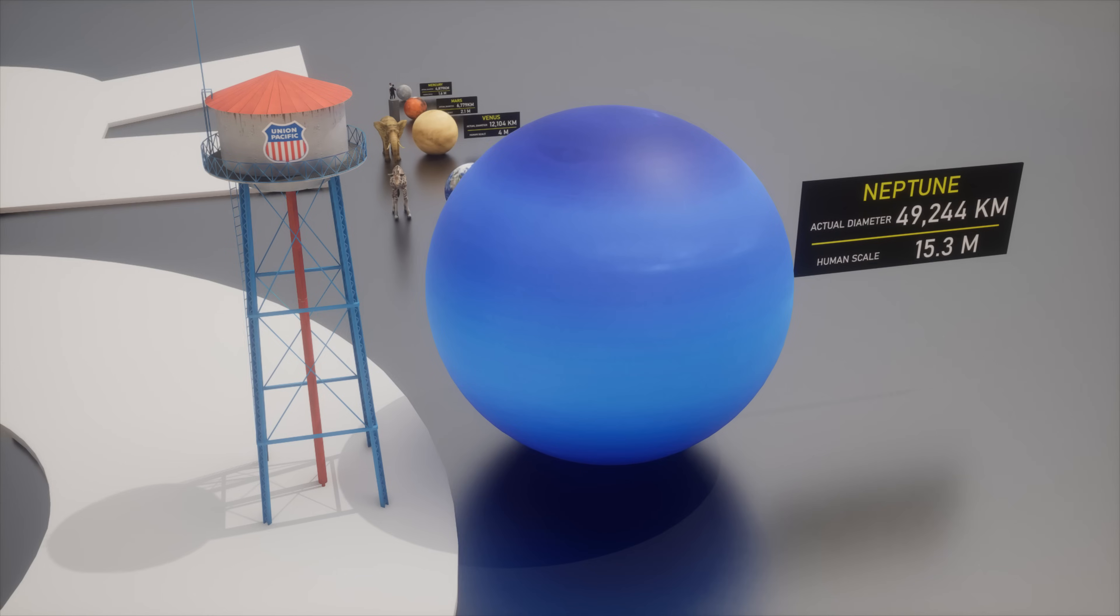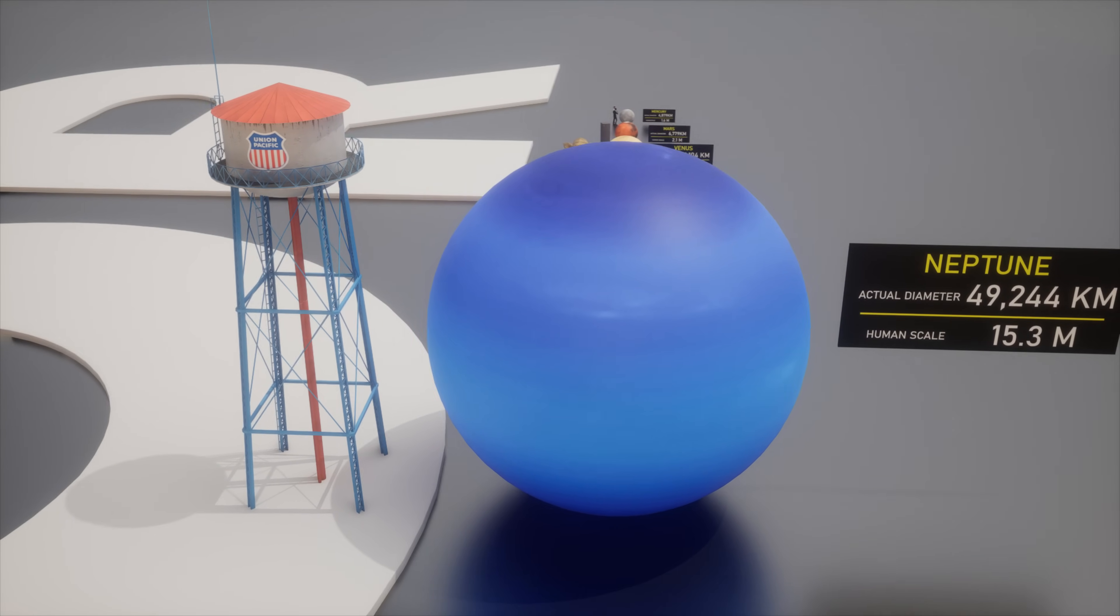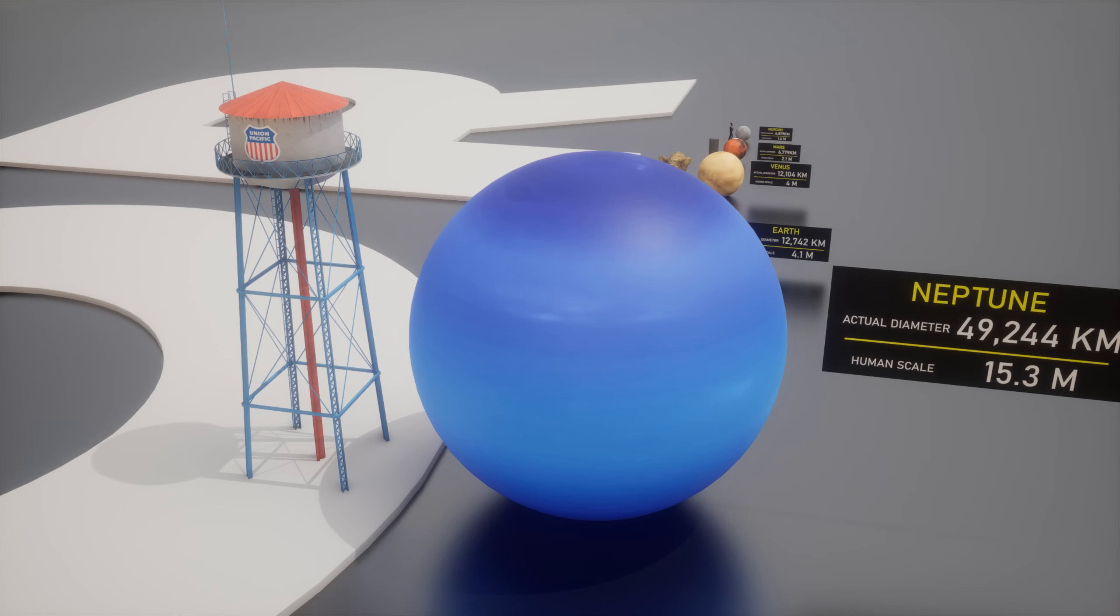Now, let's venture out to the icy giant Neptune. Picture a water tower towering over a city. That's how big Neptune would appear on our human scale.